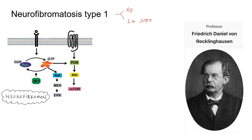Neurofibromatosis type 1 is otherwise known as von Recklinghausen disease, named after Professor Frederick Daniel von Recklinghausen who described the disease.